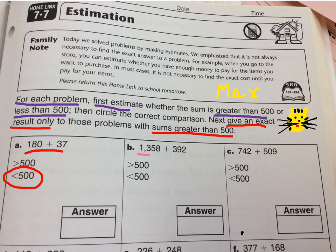Now we have 1,358. Let's say that's about 1,400 plus 392. That's about 400. Of course this is going to be greater than 500, because this number by itself is greater than 500. Together they would be about 1,800 for an estimate. So now I need to solve this.